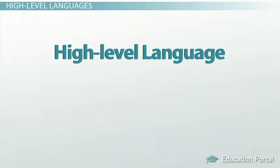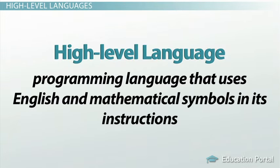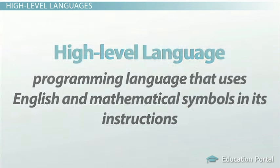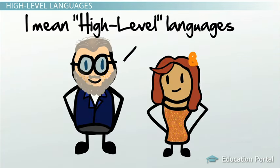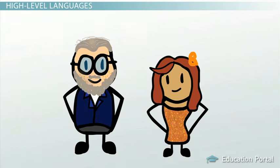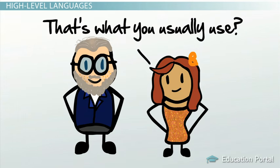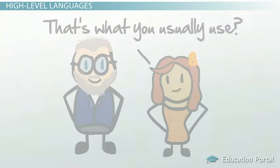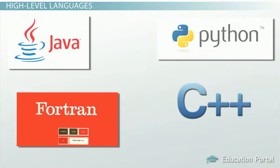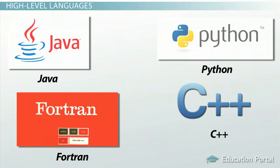A high-level language is a programming language that uses English and mathematical symbols — like plus, minus, percent, and many others — in its instructions. When using the term programming languages, most people are actually referring to high-level languages. High-level languages are the languages most often used by programmers to write programs. Examples of high-level languages are C++, Fortran, Java, and Python.